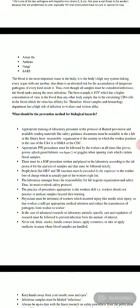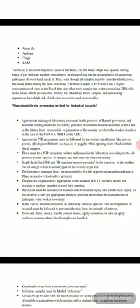Blood is the most important tissue in the body — it is the body's highway system linking every organ with one another. Thus, there is an elevated risk for the accumulation of dangerous pathogens of every kind inside it. Even though all samples must be considered infectious, blood ranks among the most infectious. The best example is HIV, which has the highest concentration of virus in the blood than any other body sample, due to the circulating CD4 cells in the blood which the virus has affinity for. Therefore, blood samples in the hematology department carry a high risk of infection for workers and visitors alike.